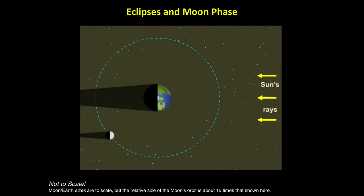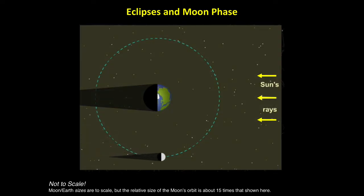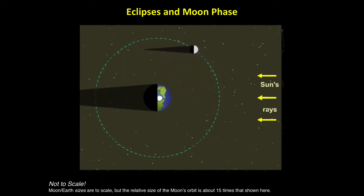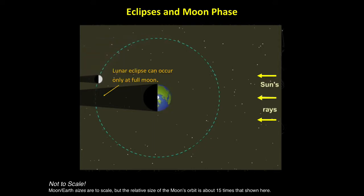Let's begin by looking down on the moon's orbit around Earth, with dark cones representing the full shadows that each world casts into space. Starting the animation, we see that the moon's shadow can touch Earth only when it is here, at the new moon position. Resuming the animation, we see that Earth's shadow can fall on the moon, creating a lunar eclipse, only at full moon.